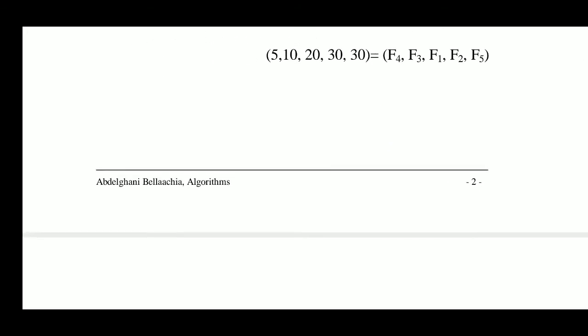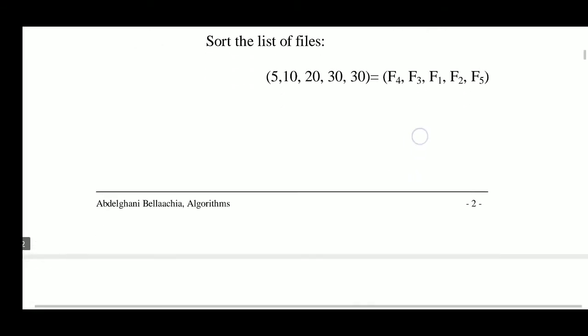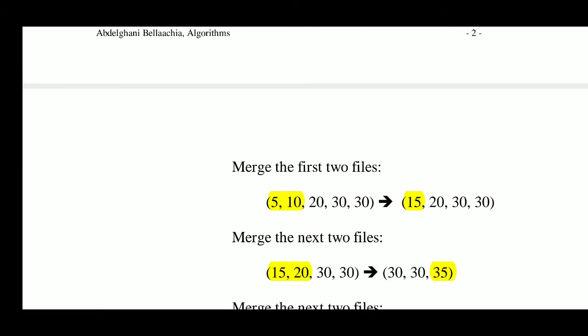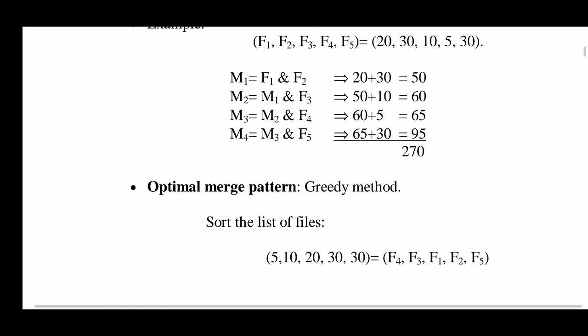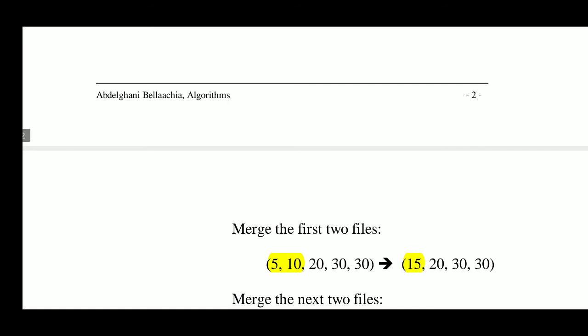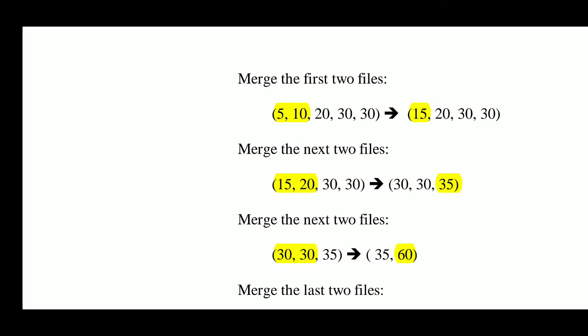Each time you find the smallest-element-count file, that is taken into consideration first to merge. So we will take F4 as the first file and F3 as the second file — sorted in increasing order of number of elements. F4 and F3 are merged first, giving 15 elements with a total time of O(15).